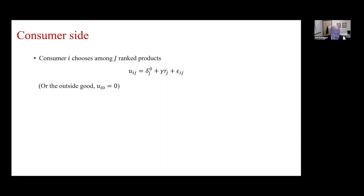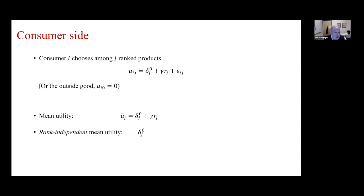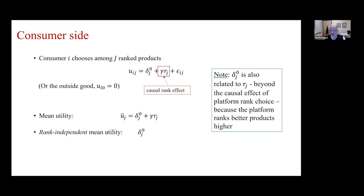On the consumer side, consumer i chooses among J ranked products with a utility function. We separate delta_j0, the rank-independent quality of products, from the part causally determined by rank location. So mean utility is delta_j0 plus gamma times R_j, where the causal rank effect is gamma*R_j. Importantly, delta_j is also related to R_j beyond the causal effect because the platform ranks better products higher. We want to isolate the causal part because that's what, by re-ranking, could cause different things to be sold and different consumer surplus levels.